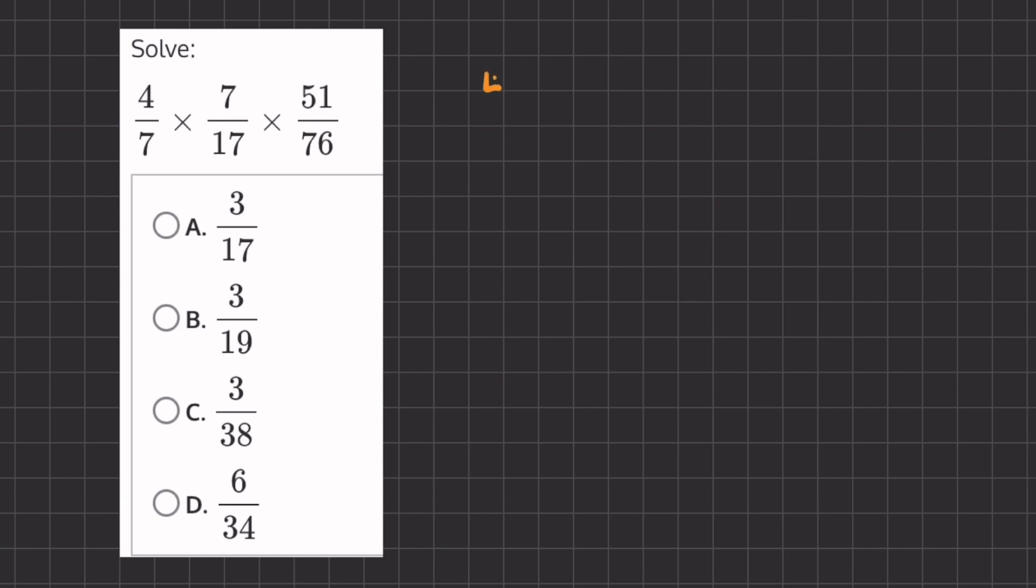So if we take this 4 and we put it over 76, and we change this denominator of 7 and we move it to be under the numerator 7, and we take this 17 and we place it under the numerator of 51.